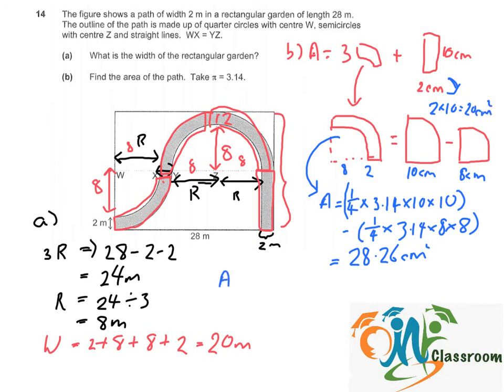So now to find the total area, it will be 3 times 28.26 cm square, because the total area equals 3 times the area of the arc plus the rectangle, which would be 20 cm square. So the answer should be 104.78 cm square.